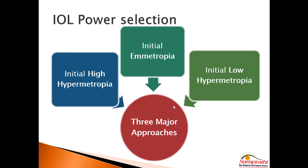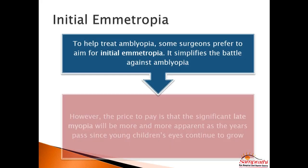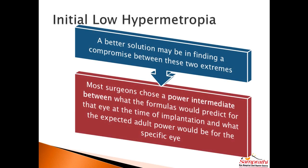If you go for initial hypermetropia, the advantage is that as an adult the child will not require glasses; however, the disadvantage is high hypermetropia in the early years when you need to tackle amblyopia. If you go for initial emmetropia, it simplifies the battle against amblyopia and visual results are good, but the child will end up with very high myopia as an adult. That is why most people choose the intermediate approach of low hypermetropia — you provide spectacle or contact lens correction in the initial years, amblyopia management is easier, and the child may end up with only a small myopia as an adult.